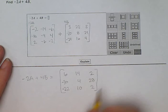So now this is my solution. This 3 by 3 matrix: 6, 14, 2; -30, 4, 28; -22, 10, 2.